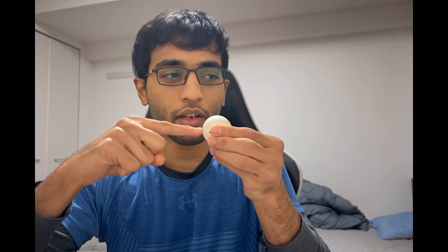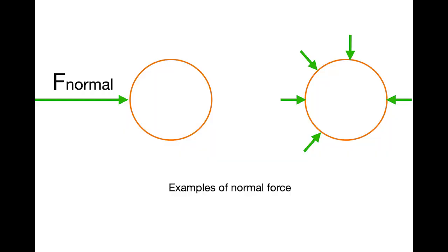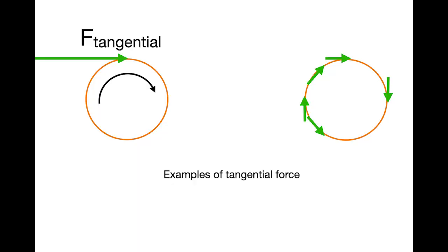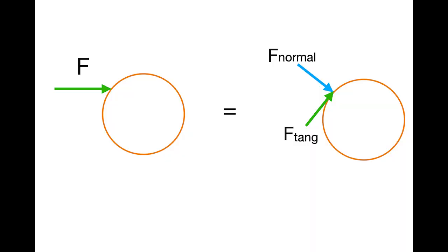Moving forward let's just name these forces. If you have a force acting just head-on we'll refer to it as a normal force. Any force that resembles just skimming the surface we'll refer to as the tangential force. So how do we think about a force that is neither normal nor tangential? Fortunately you can break it down in terms of a normal force and a tangential force.